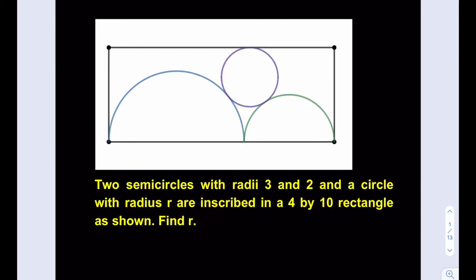Hello everyone, in this video we're going to be solving another geometry puzzle. Two semicircles with radii 3 and 2 and a circle with radius r are inscribed in a 4 by 10 rectangle, as shown. Find r.